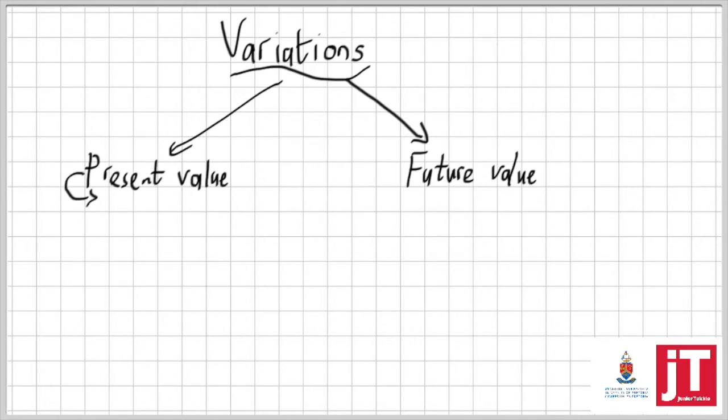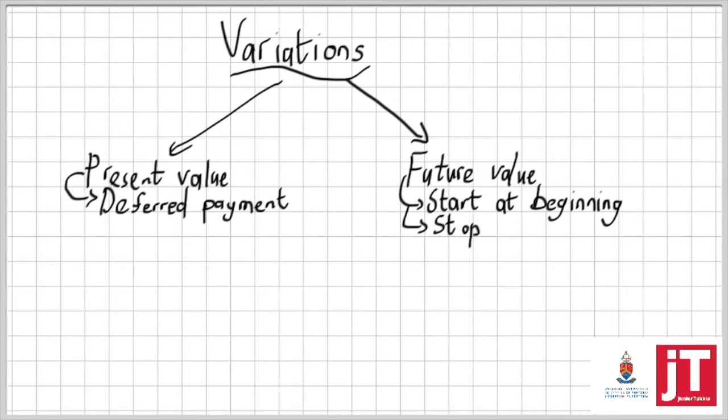First of all, in present value we are going to look at deferred payments—in other words, payments where they give you a payment break or holiday, and they always make it sound so amazing. Then in the next videos we are going to look at what variations there are in terms of future value annuities, like starting at the beginning of the period or stopping before the payout happens.